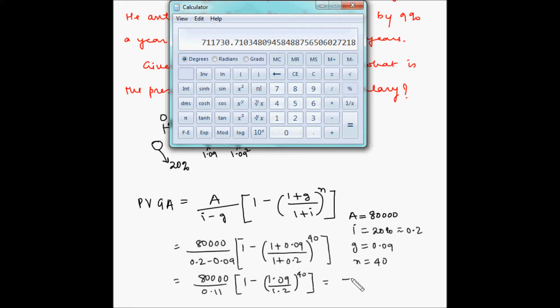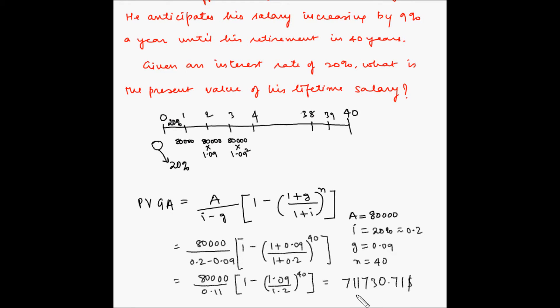So this comes out to be $711,730.71. So basically if Vaibhav has $711,730.71 today and he invests that at 20% per annum interest rate, then he'll be able to withdraw this growing cash flow for the next 40 years. In other words, this is the present value of this growing annuity.